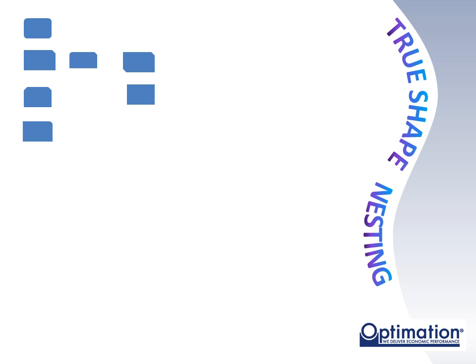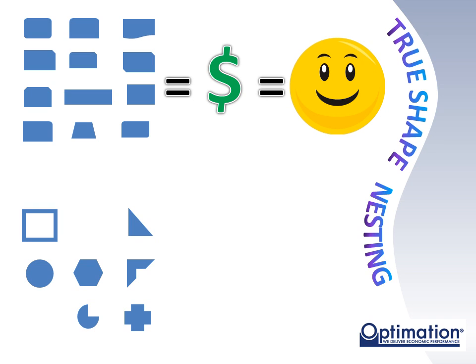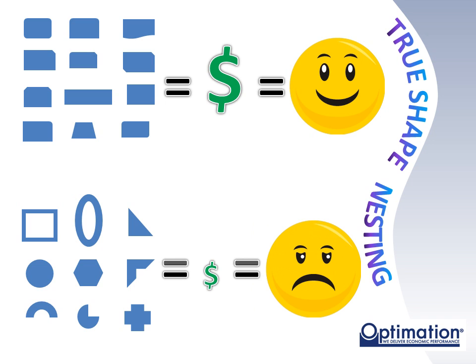If you are nesting relatively simple parts, a true shape nesting system can provide significant improvements in efficiency over rectangular nesting. However, if you have a more complex environment, or if the solution is paired with a list-driven nesting system, then true shape nesting is capable of providing less than optimal results.